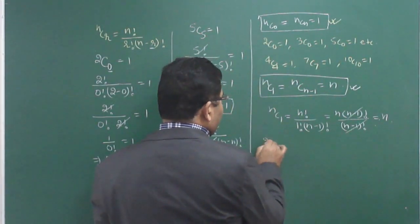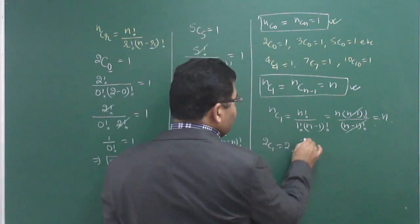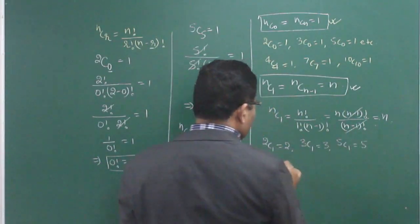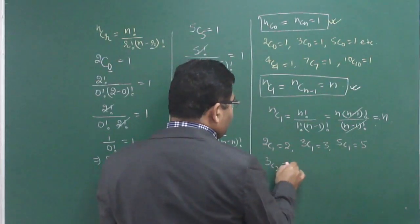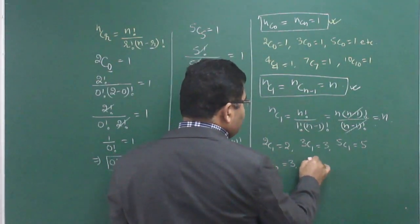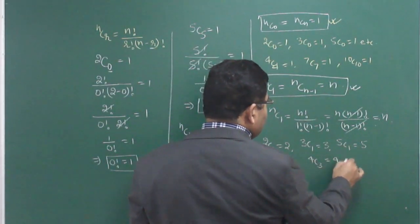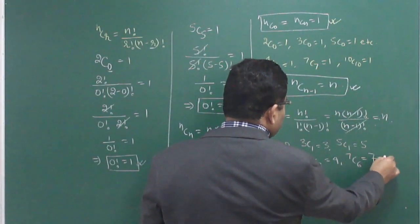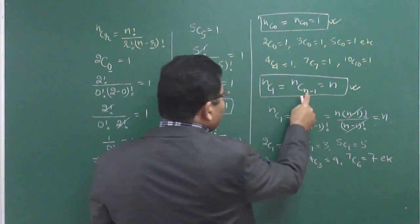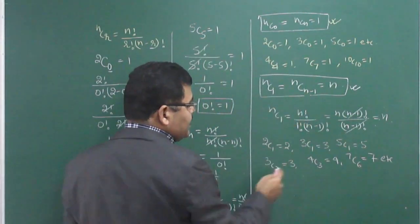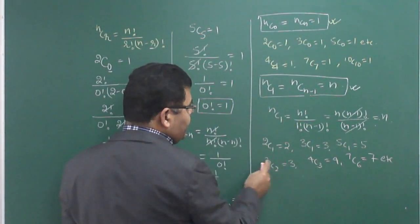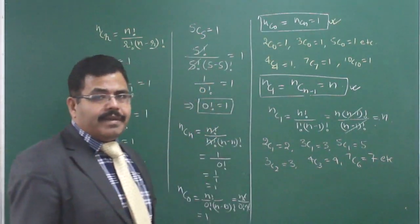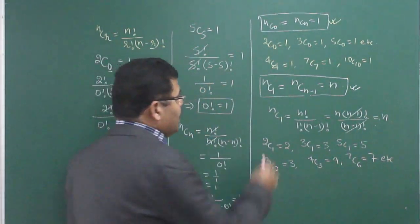For application: 2C1 = 2, 3C1 = 3, 5C1 = 5. Similarly, 3C2 = 3, 4C3 = 4, 7C6 = 7. Notice that NCN−1: the answer is always the bigger number N. For example, 4C3 gives 4, and 7C6 gives 7.